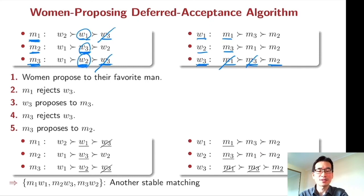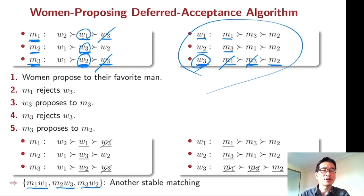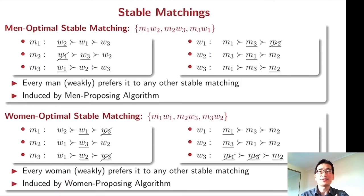So that's the end of the algorithm. And this algorithm yields us another stable matching in which M1 W1, M2 W3, and M3 W2. So again, this is a stable matching, because if there is a blocking pair, then that must include W3, because W1 and W2 already have their favorite man. And W3 can be better off by being paired with either M1 or M3, but M1 and M3, they prefer their current partners W1 and W2 than W3. So W3 cannot block this matching. So this is another stable matching. So we have found two stable matchings.